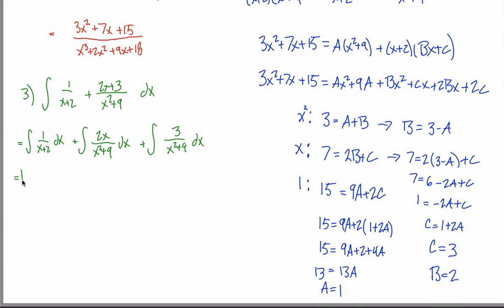The first integral — one over x plus two — gives the natural log of the absolute value of x plus two. For the second, use a u substitution where u equals x squared plus nine, so du equals two x dx. The two x and dx turn into du, leaving one over u, whose antiderivative is the natural log of the absolute value of u, which is x squared plus nine.